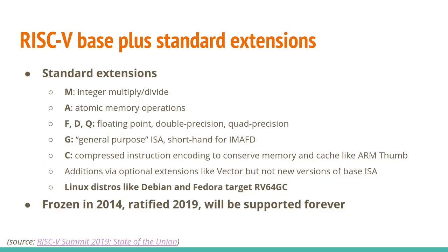The RISC-V base gets these standard extensions added to it. For example, M is for multiply and divide. A is for atomic, which is useful for multi-processor systems. Then there are different precisions of floating point: F, D, and Q. G is for general purpose — shorthand for integer, multiply, atomic, float, and double precision float. C is for compressed instruction encoding which helps conserve memory and cache, similar to ARM Thumb.